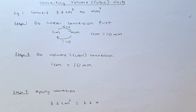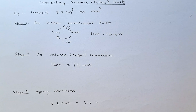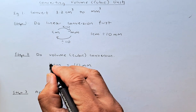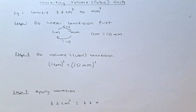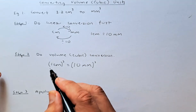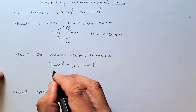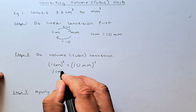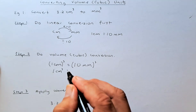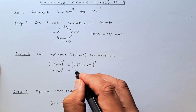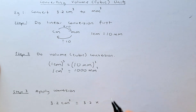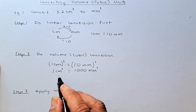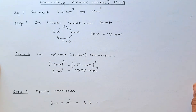Once you have done that, you are going to do a volume conversion, also called a cubic conversion. To do that you have to cube both sides. So you're going to cube 1 centimeter and you have to cube 10 millimeter. When you cube it, 1 cubed is 1 times 1 times 1 which is 1, so the left hand side is 1 centimeter cube, and on the right hand side 10 times 10 times 10 gives you 1000 millimeter cube. So 1 centimeter cube is equivalent to 1000 millimeter cube.